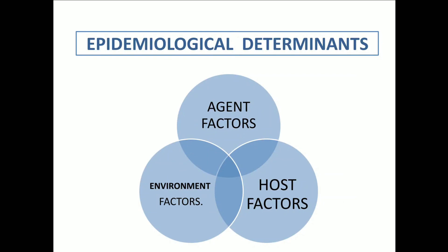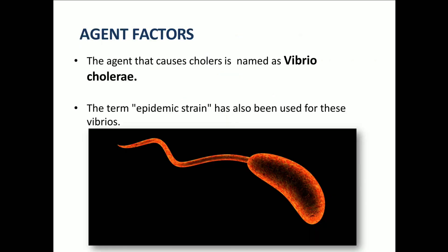Coming to the epidemiological determinants: these include agent factors, environmental factors, and host factors. The agent that causes cholera is Vibrio cholerae. The term epidemic strain has also been used for this Vibrio.